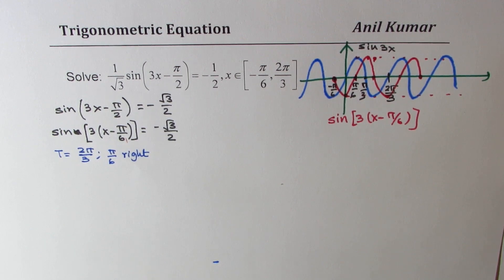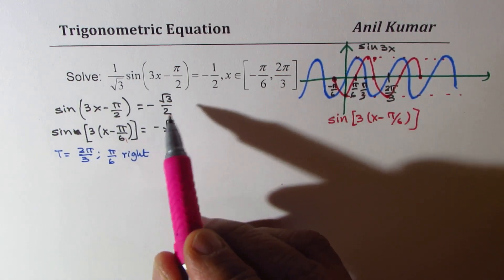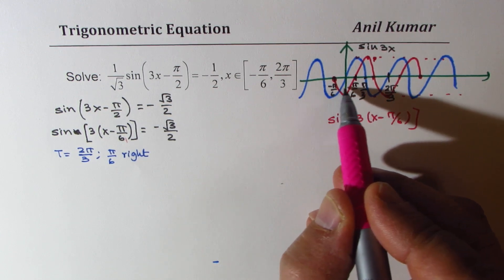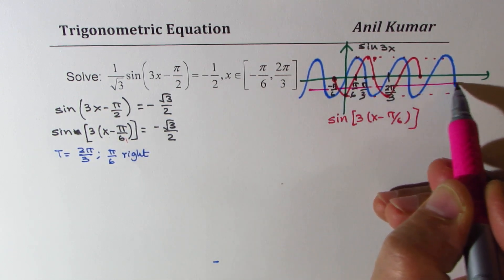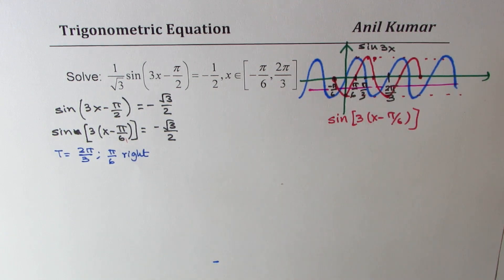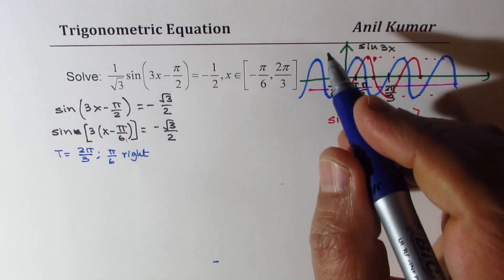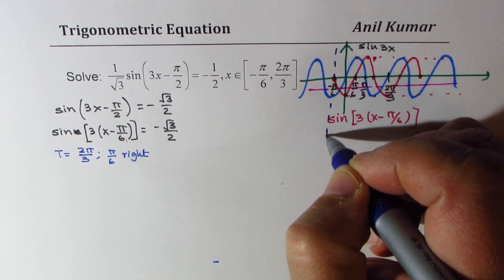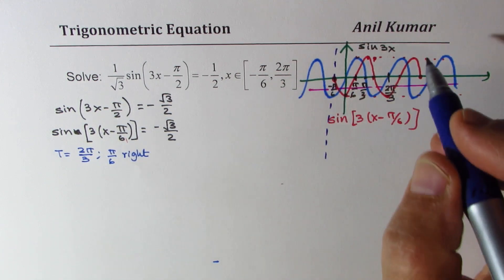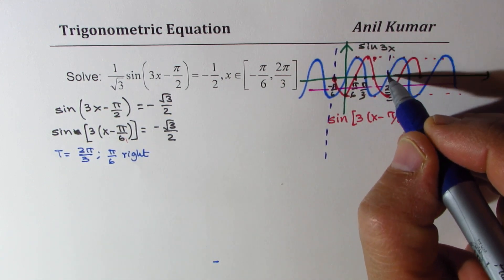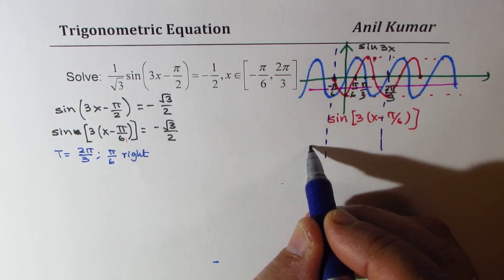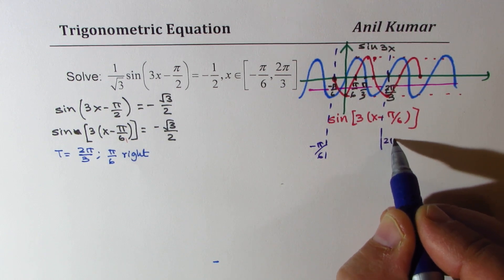Now, we are looking for a solution which is equal to minus something, that means we are looking for a value which is kind of like this. Within the given interval of minus pi by 6 to 2 pi by 3, which is the first wave here. That becomes the interval.